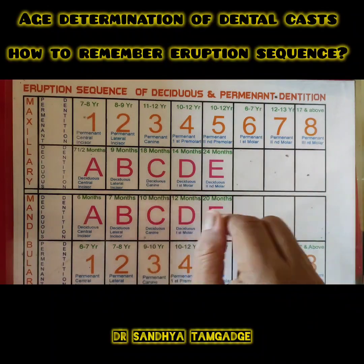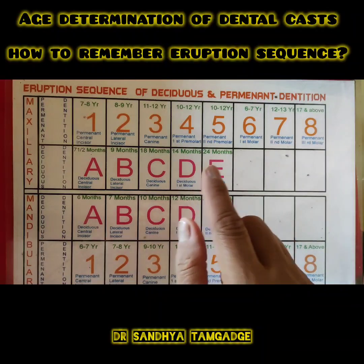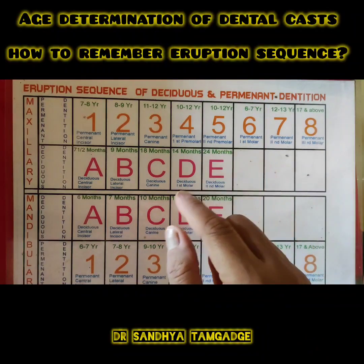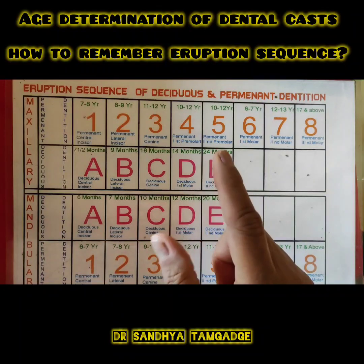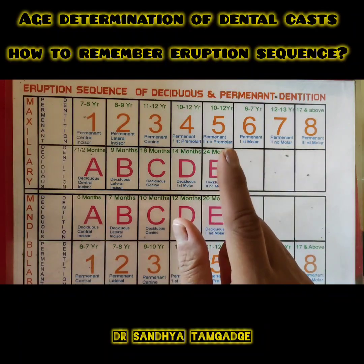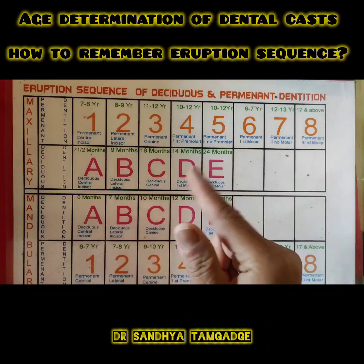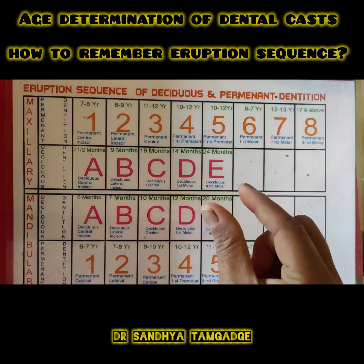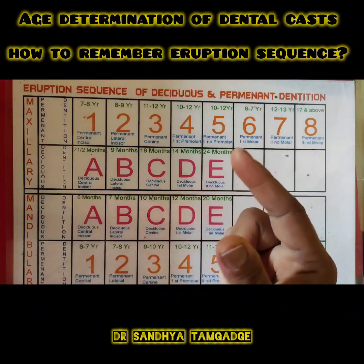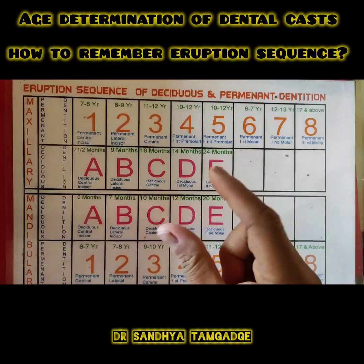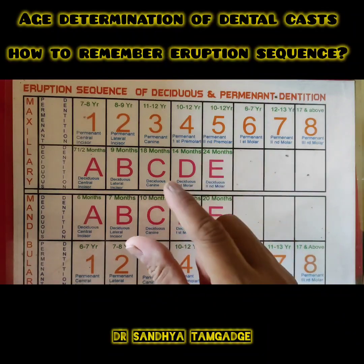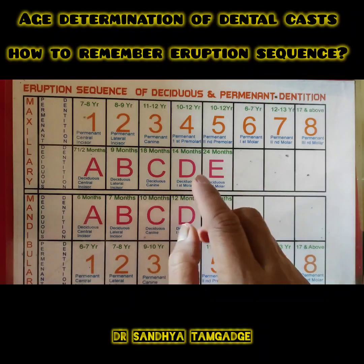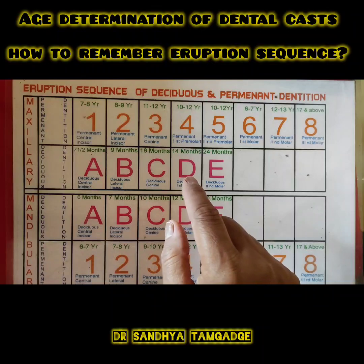That is the basic description of the eruption sequence of deciduous and permanent dentition. Whenever you see a cast, understand this eruption chart in batches — only then, within a time limitation, can you quickly identify the age of the cast for your spotting exam or age determination exercise. Thank you so much, I hope this explanation is helpful.